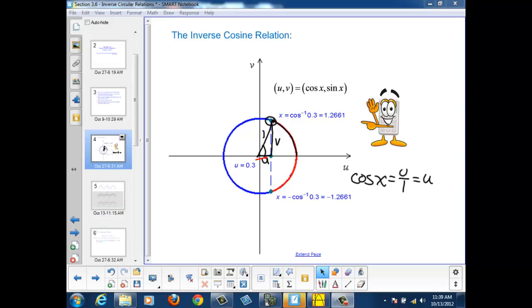And if we look at the unit circle, we can see that the first time the u coordinate is 0.3 is for this angle.